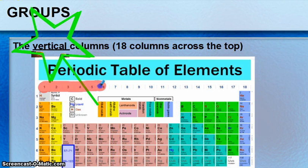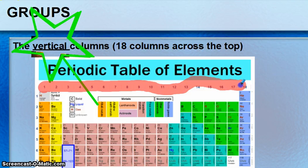So, one, two, three, four, five, six, seven, eight, nine, ten, all the way over to 18. So these are the 18 groups or families.